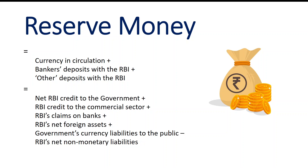We also have a measure called reserve money. Reserve money equals currency in circulation plus bankers' deposits with the Reserve Bank plus other deposits with the Reserve Bank. This also equals net RBI credit to the government plus RBI credit to the commercial sector plus RBI's claims on banks plus RBI's net foreign assets plus government's currency liabilities to the public.